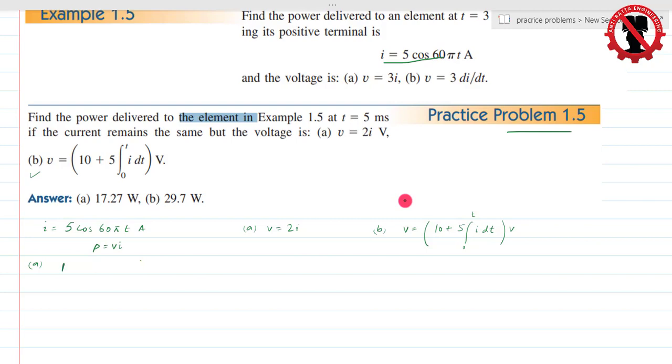If I talk about part A, then I have power equal to Vi. And as given, V is equal to 2i. So 2 into i into i. This is 2 into i squared. So I put in the values: 2 into i value is 5, 5 cos of 60 pi t, whole squared.